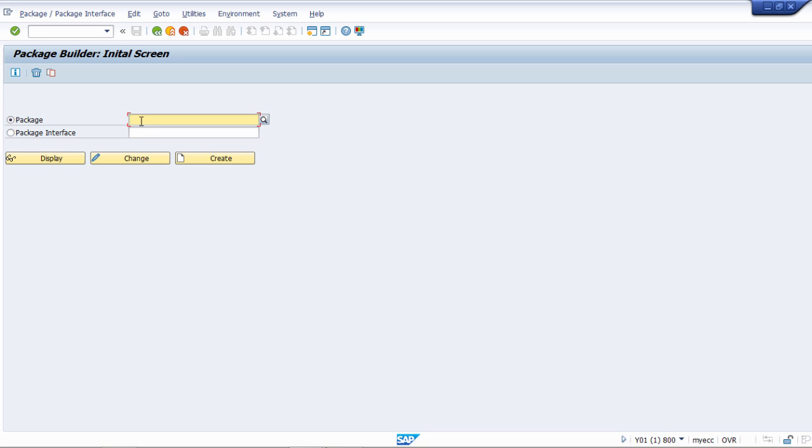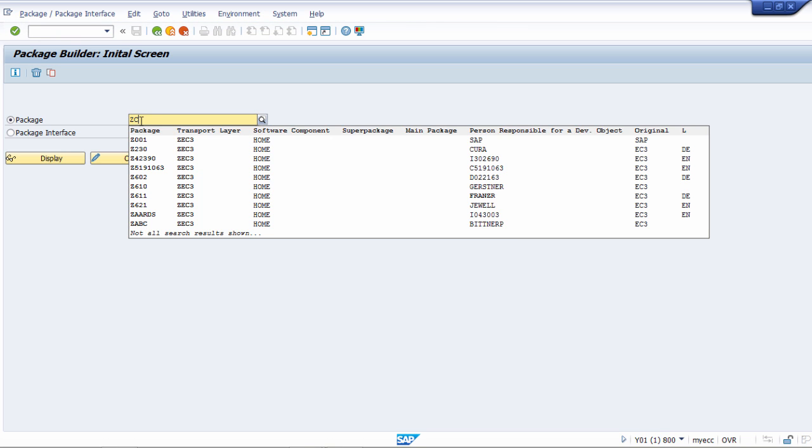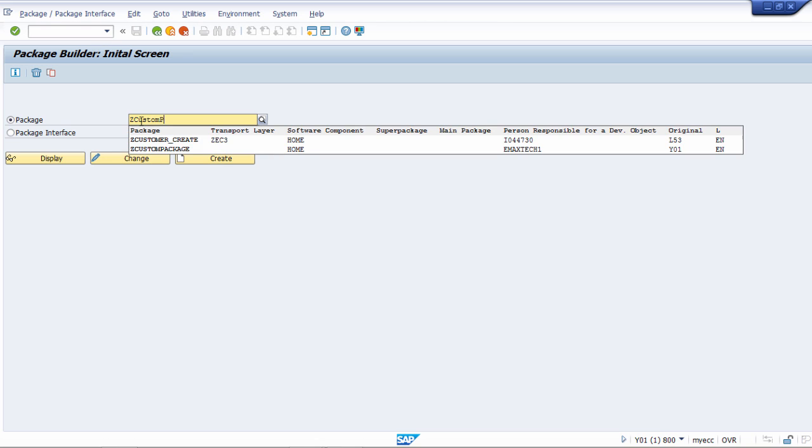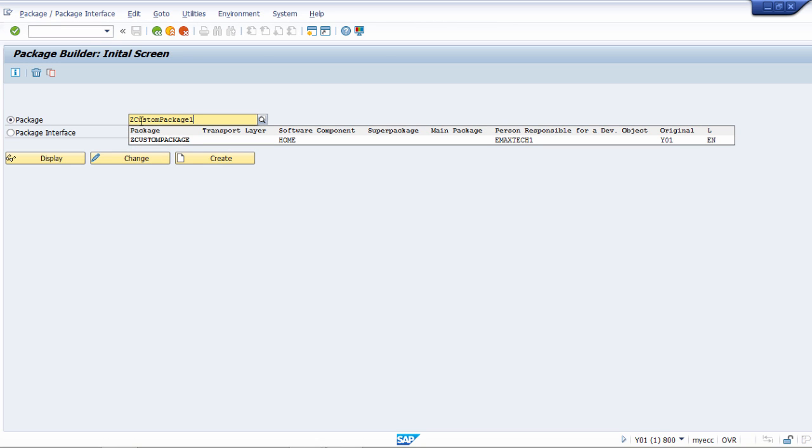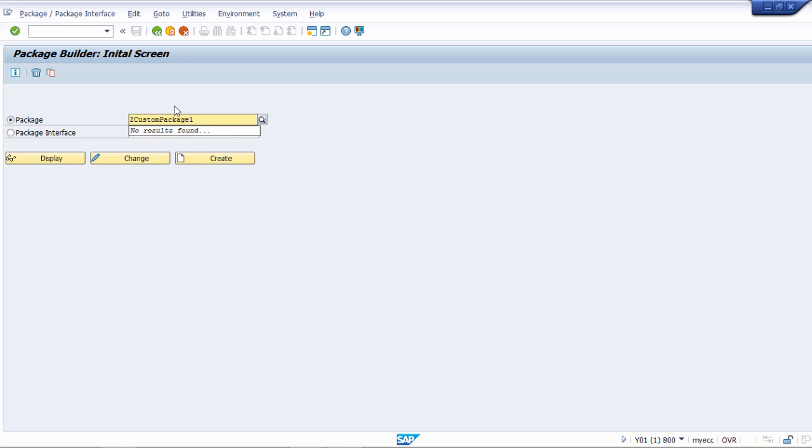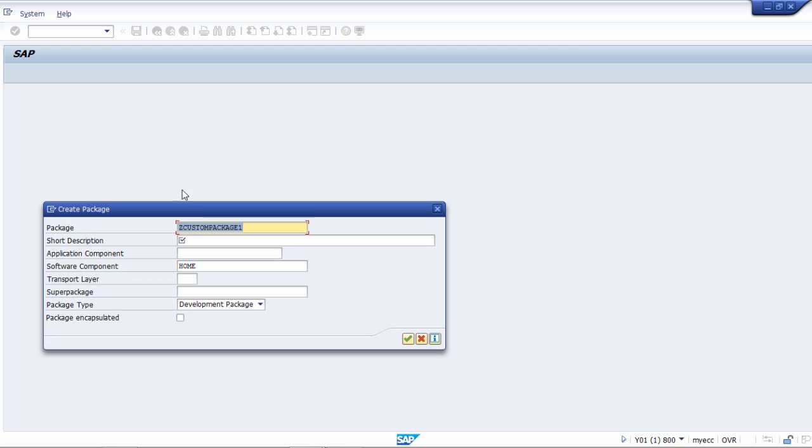Let us provide the name here, Z_CUSTOM_PACKAGE_1. This is our name here, this we will be creating. There are three options, that is display, change, and create. If it is already created we can display it, or if it is already there we can change it. And if it is not there we can create it. Let us just create this new custom package.